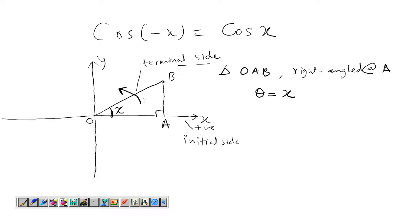we will get a triangle OAB right angled at A and theta equals x. Now the terminal side is towards the anticlockwise direction from the x-axis. So we get a positive value of theta or positive measure of angle.